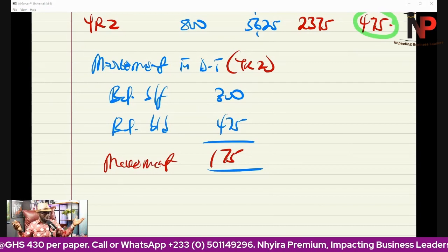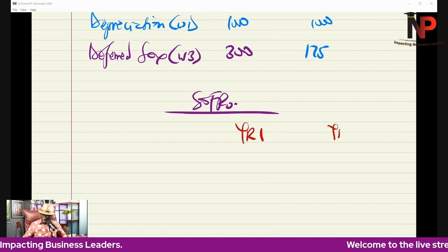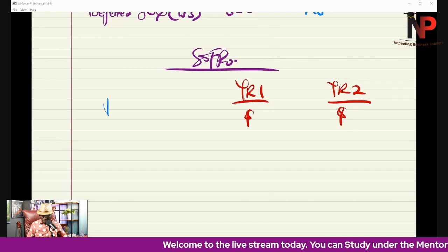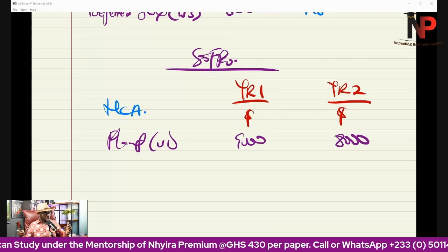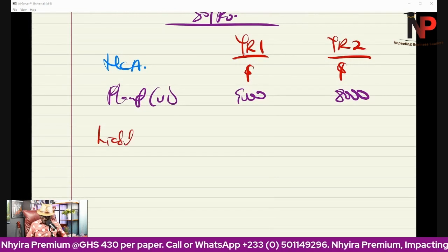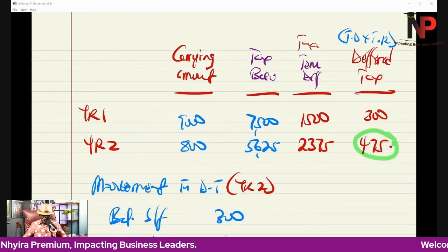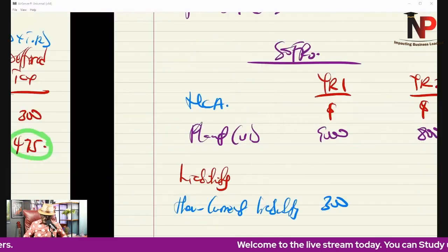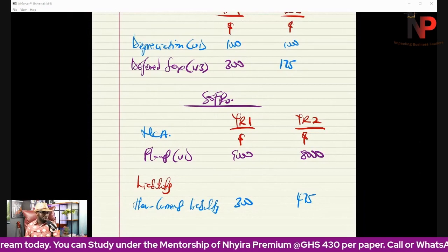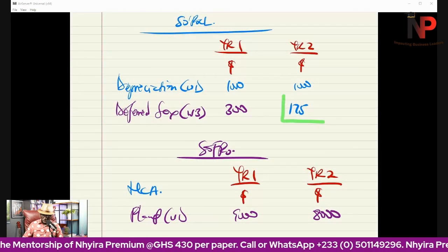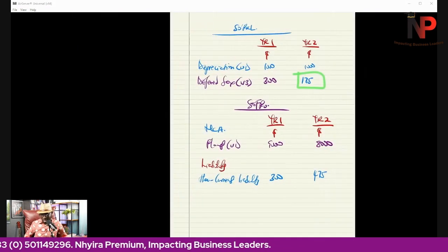In the statement of financial position, presented in columnar form for year one and year two, under non-current assets we have the carrying amounts: $9,000 and $8,000 respectively. Under liability, deferred tax is a non-current liability item — we bring in the closing balances: $300 for year one and $475 for year two. In year two, the closing balance of $475 appears in the statement of financial position, but only the movement of $175 goes to the P&L account.